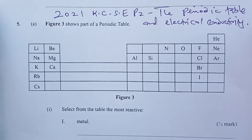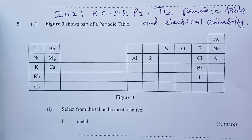2021 KCSE Chemistry Paper 2, question number 5: the periodic table and electrical conductivity. Welcome, let's learn together.